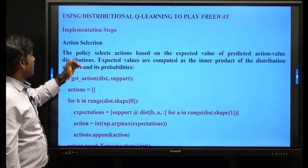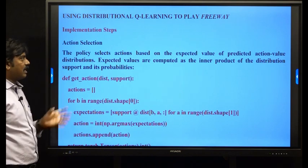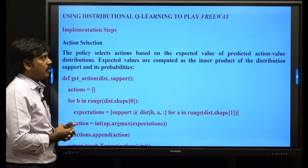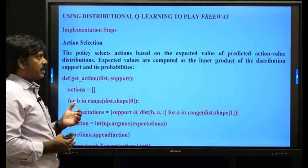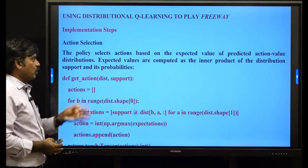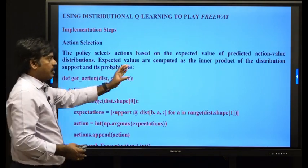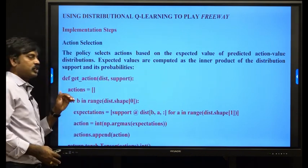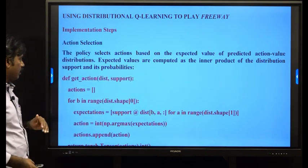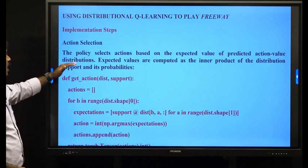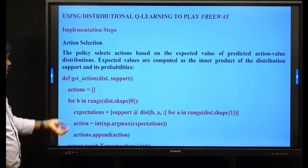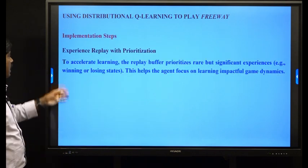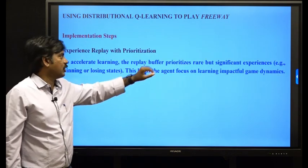For action selection, the policy selects an action based on the expected value of the predicted action-value distribution. The expected values are computed as the inner product of the distribution support and its probabilities. The next step is action selection and experience replay with relative prioritization.